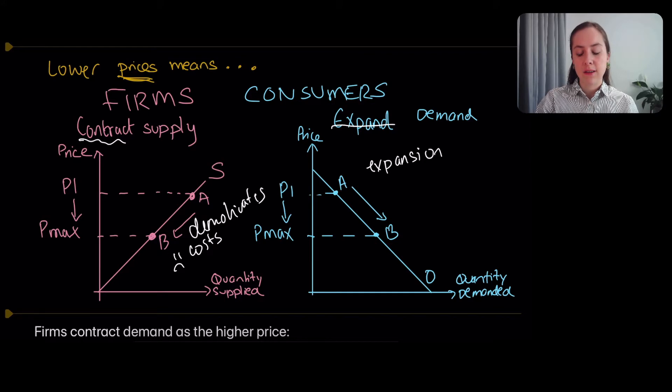So the reasons for these are your income effect, your substitution effect, and your diminishing marginal utility are working together to cause that expansion. And again, the maximum price doesn't shift anything because ultimately it's just a change in the price.